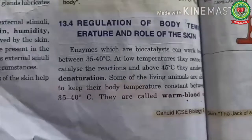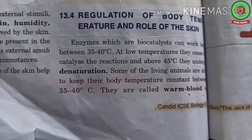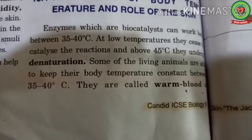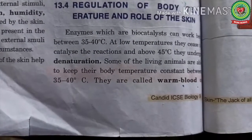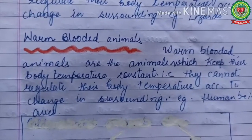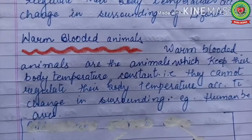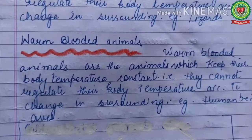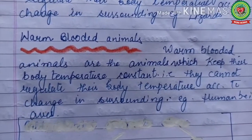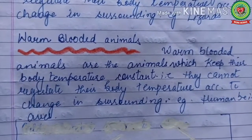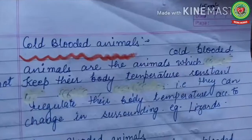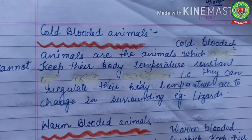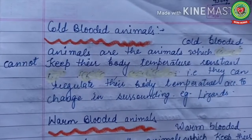Some living animals are able to keep their body temperature constant and are called warm-blooded animals. Warm-blooded animals keep their body temperature constant and cannot regulate it according to changes in surroundings — examples are human beings and birds. Cold-blooded animals cannot keep their body temperature constant and can regulate it according to changes in surroundings — for example, lizards.